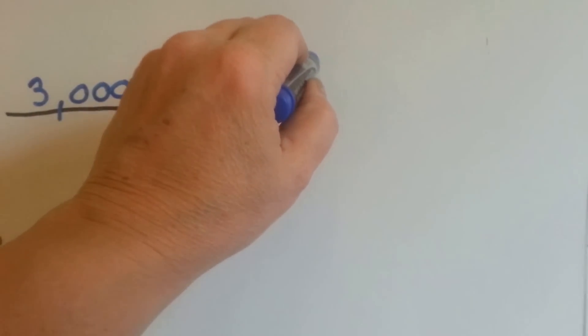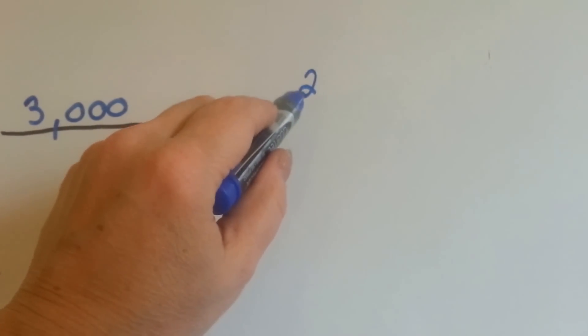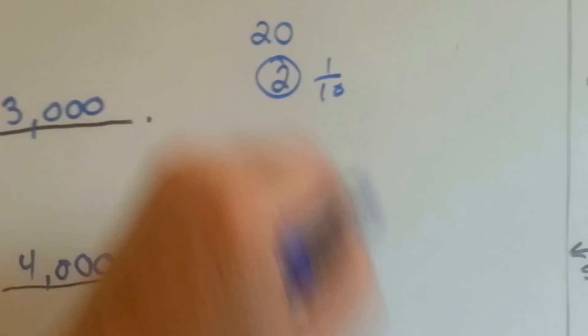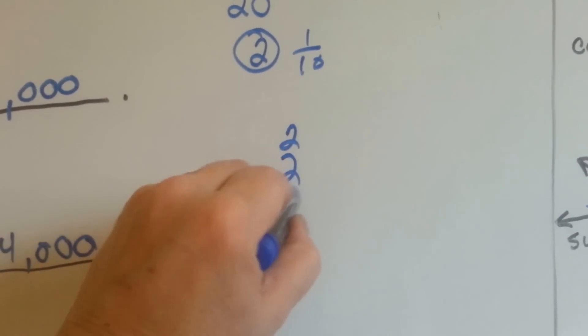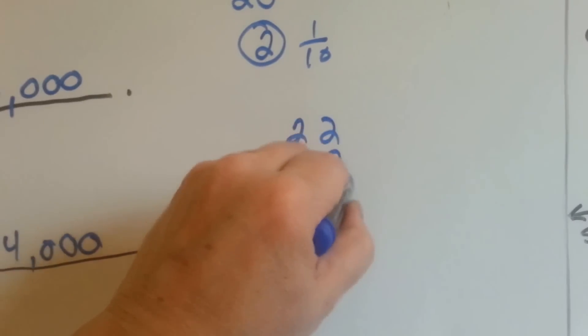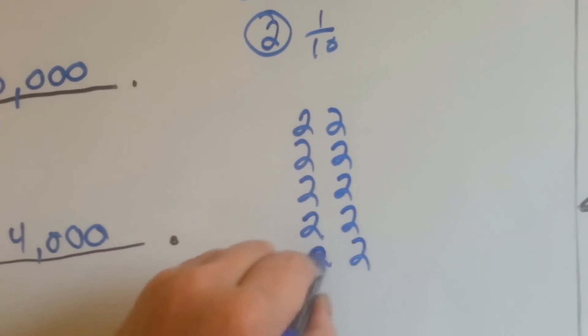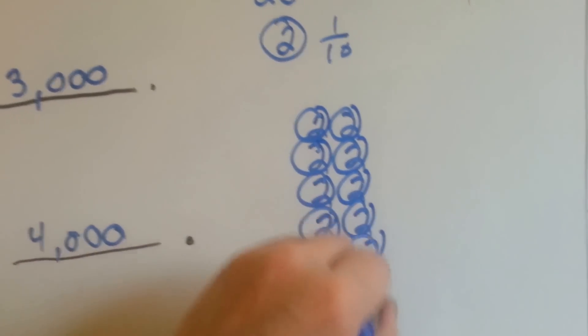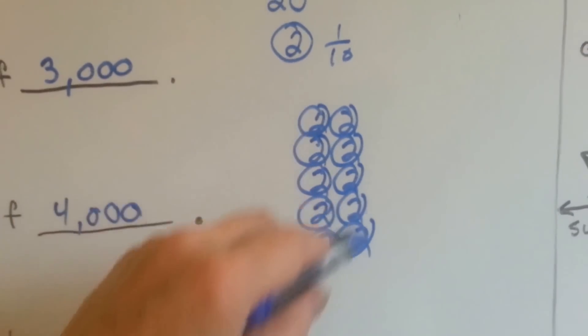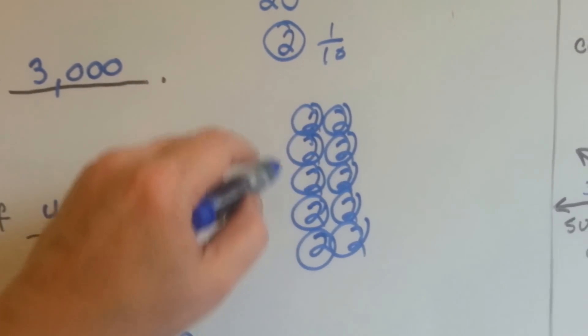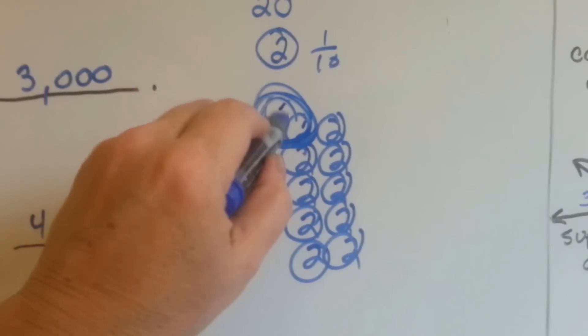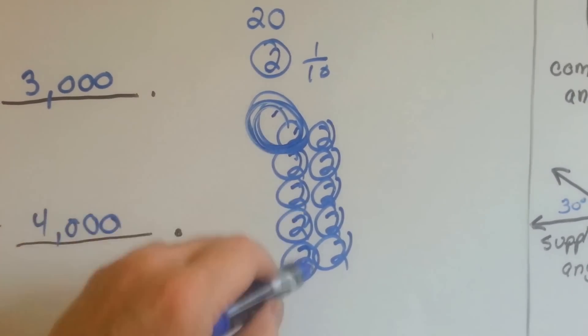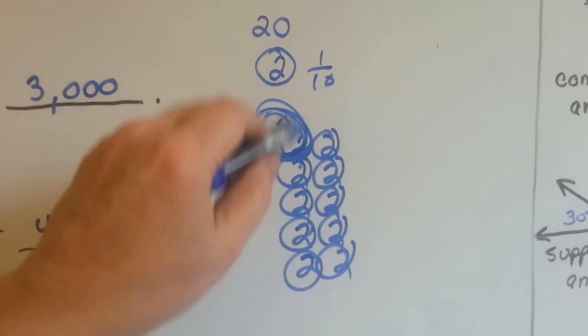Because it takes 10 twos to make a 20, this 1, 2 is 1 tenth of that 20. See? If we had 10 twos, 10 times 2 is 20. So all of these together equal 20. And then if we only had 1 of them, this one, it would be 1 tenth of these circles. See? It would be 1 of the 10. It would be 1 tenth. So 2 would be 1 tenth.